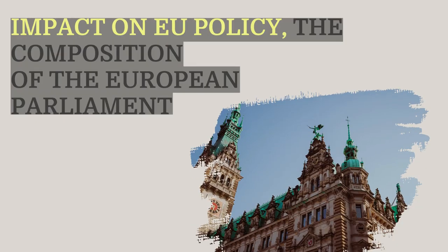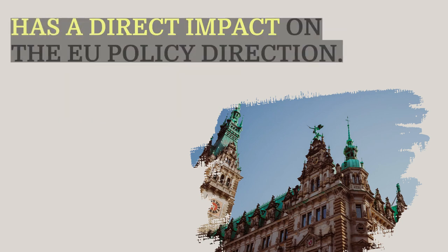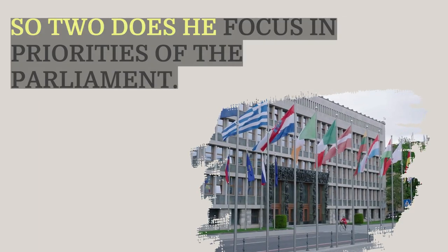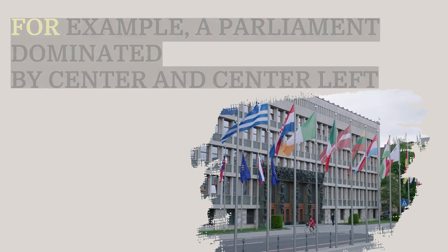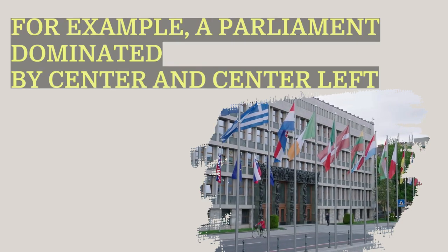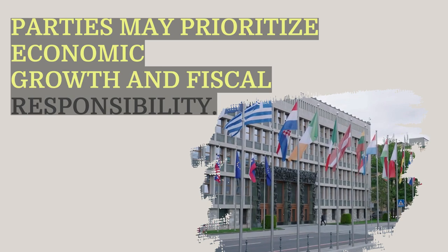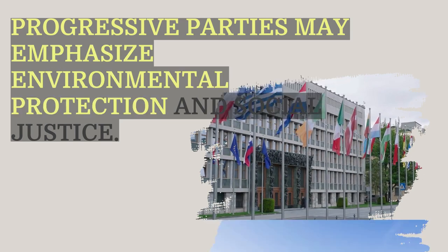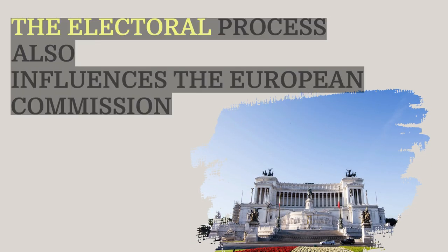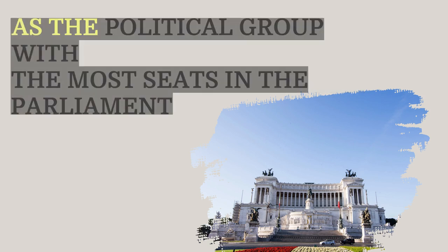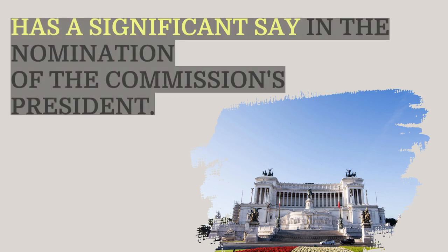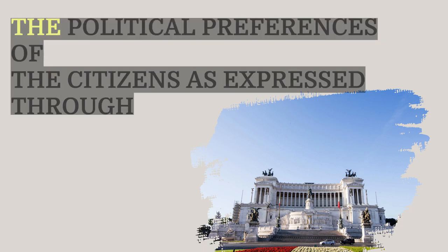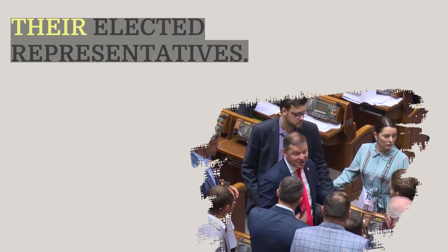The composition of the European Parliament has a direct impact on the EU's policy direction. As the balance of power shifts between political groups, so too does the focus and priorities of the Parliament. For example, a Parliament dominated by centre-right and centre-left parties may prioritize economic growth and fiscal responsibility, while a Parliament with a strong presence of green and progressive parties may emphasize environmental protection and social justice. The electoral process also influences the European Commission, as the political group with the most seats has a significant say in the nomination of the Commission's President.